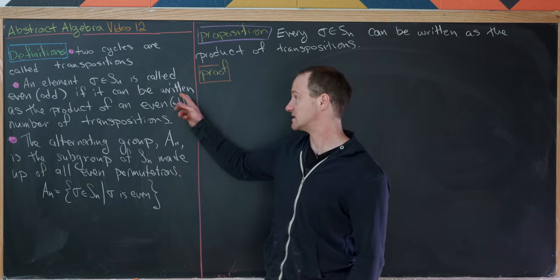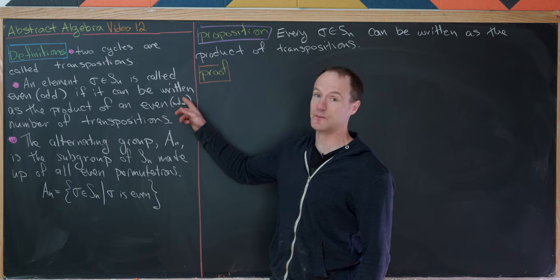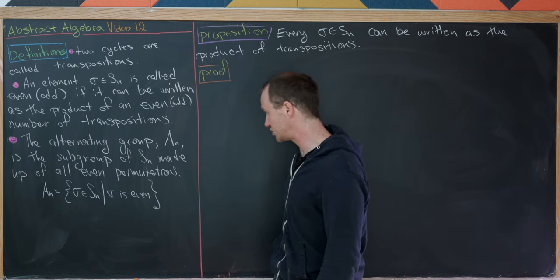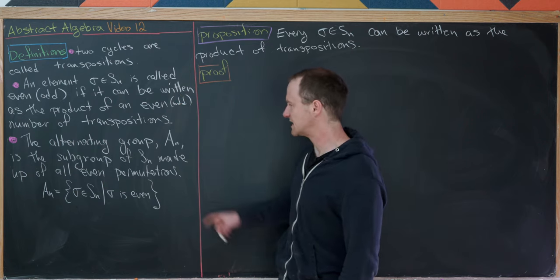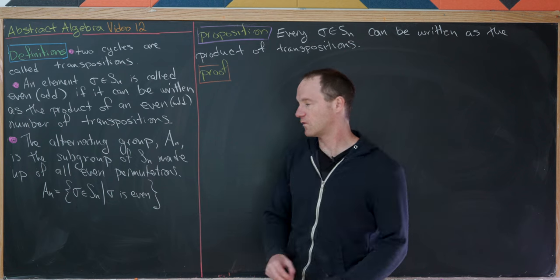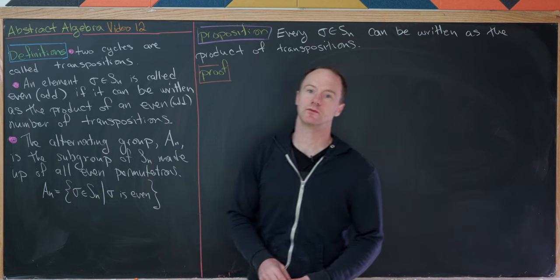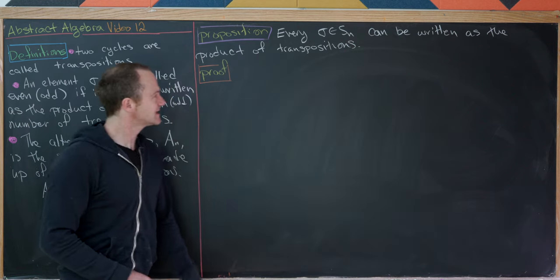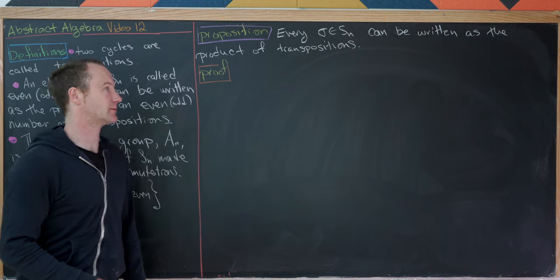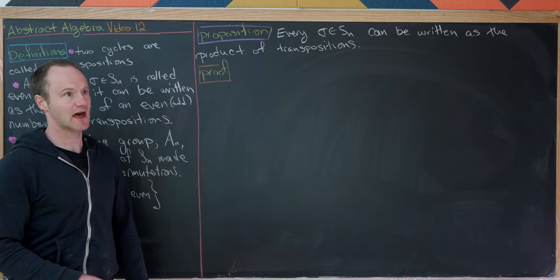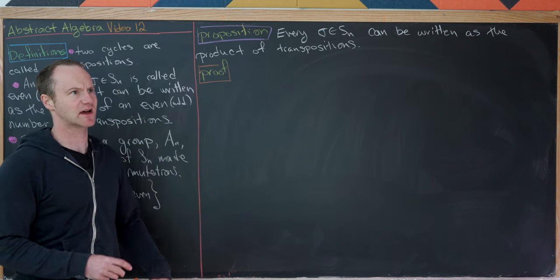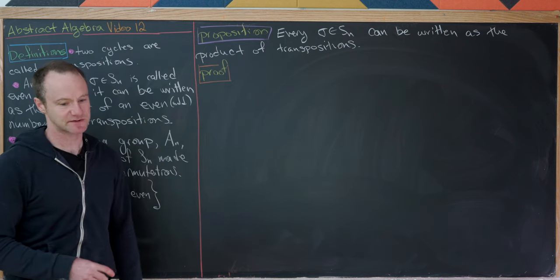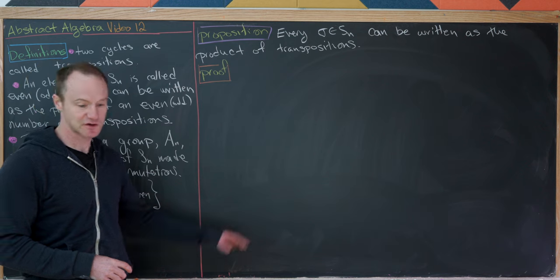Once the notion of parity is well-defined, we also need to check that An actually forms a group. Our first proposition tells us the usefulness of transpositions: we'll prove that transpositions generate the group Sn.